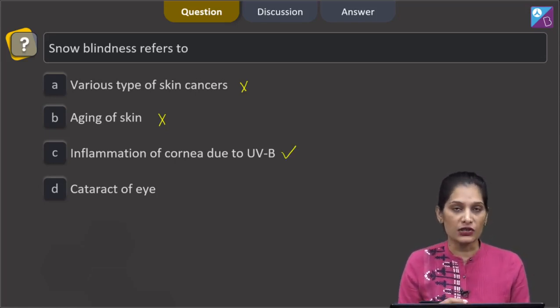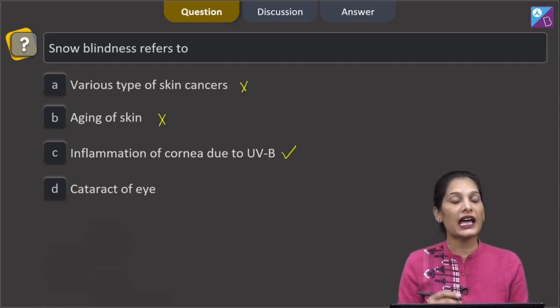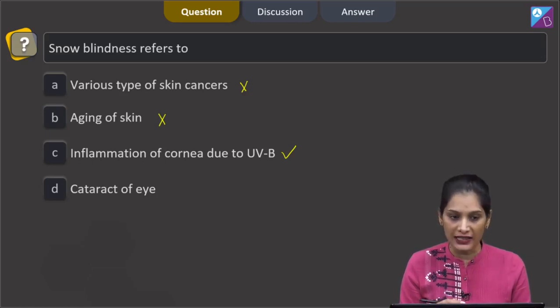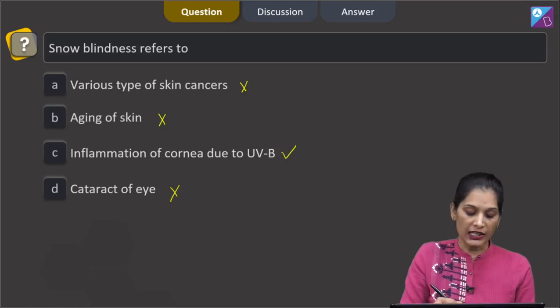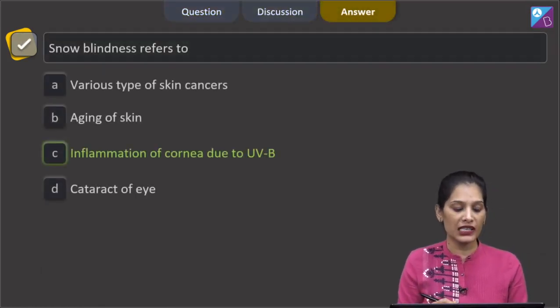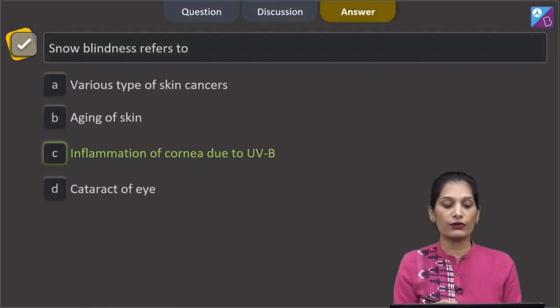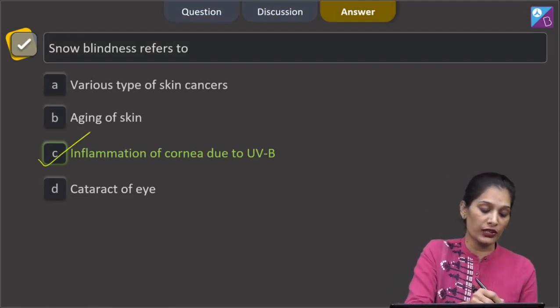UVB radiations or the ultraviolet B radiations cause the inflammation of cornea and we call it snow blindness. D, cataract of eye. No. So the correct option for the given question is option C which says inflammation of cornea due to UVB.